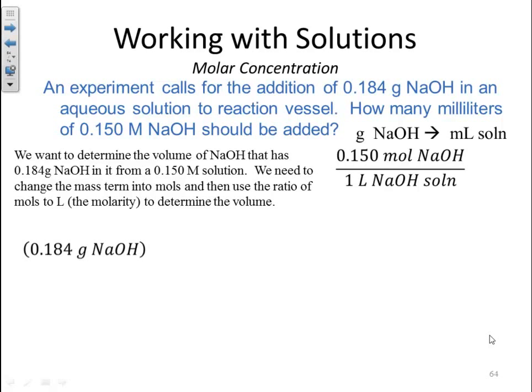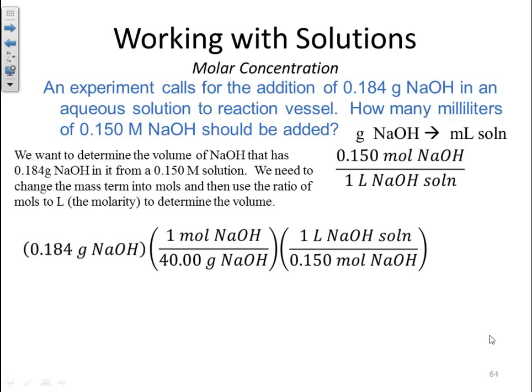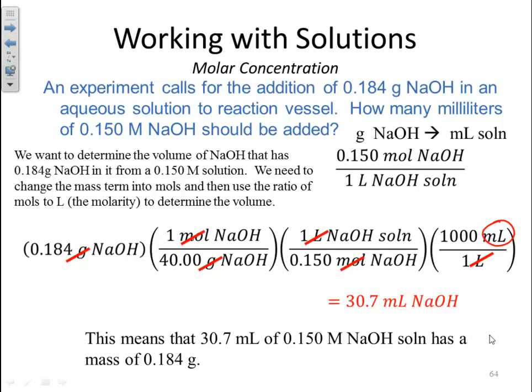So we'll start off with the 0.184 grams of sodium hydroxide. Then we'll convert that into moles using molar mass. Now I know there's a relationship between moles of sodium hydroxide and liters of sodium hydroxide through that molarity, and I'll place the moles in the denominator to get them to cancel. And then we wanted milliliters, so I'm going to have to do a conversion factor: 1,000 milliliters for 1 liter. We see that our units cancelled, leaving us in our desired unit, which is milliliters. If I multiply all this out, I get a value of 30.7 milliliters of sodium hydroxide. This means that if I have 30.7 milliliters of 0.150 moles of sodium hydroxide, that solution has a mass of 0.184 grams.